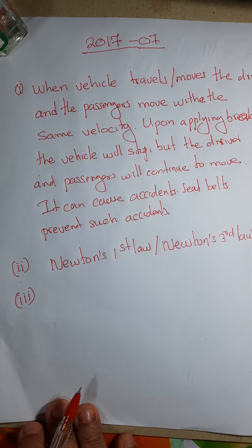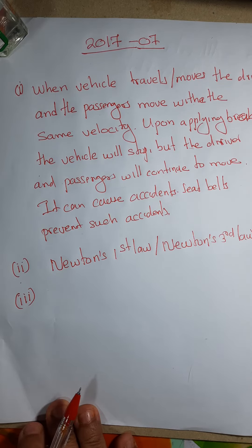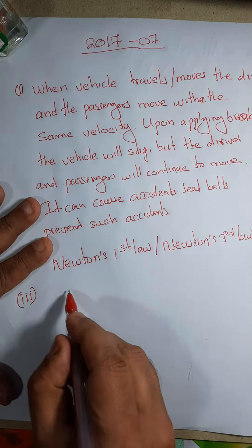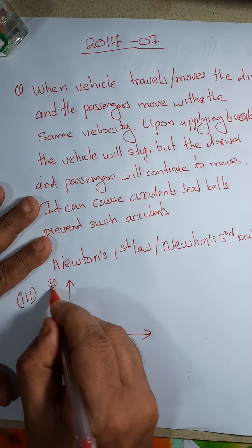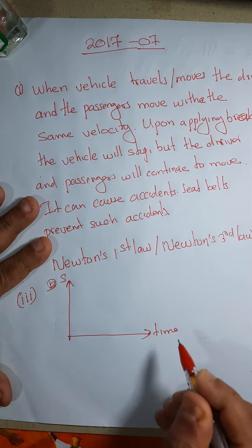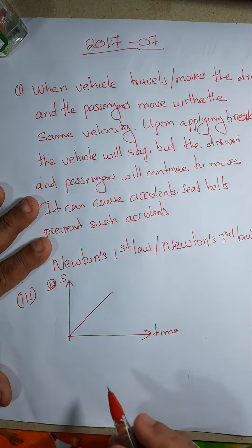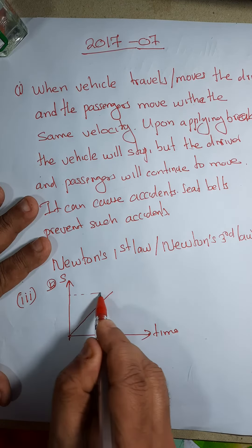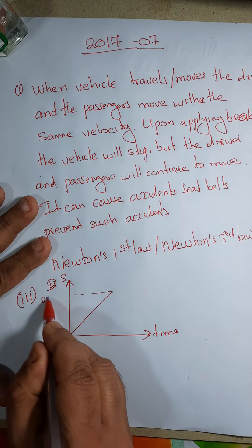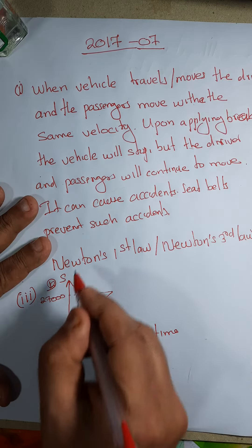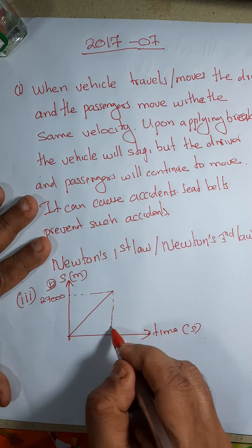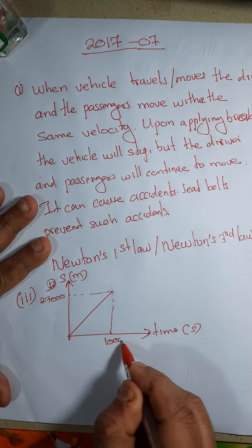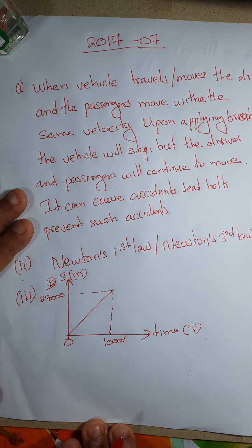Coming to the third question, you are given a displacement time graph there. In the displacement time graph, displacement is here, time is here. You are drawn this way. And this is 27,000. And displacement is said to be in meters. Time is said to be in seconds. And this is mentioned to you as 100 seconds. And this is zero.